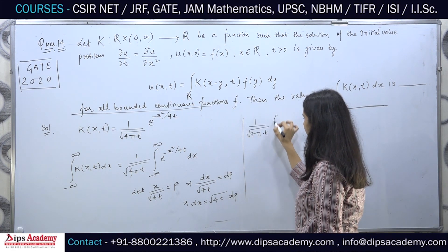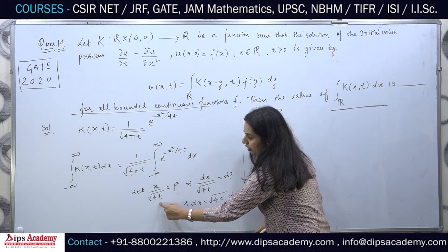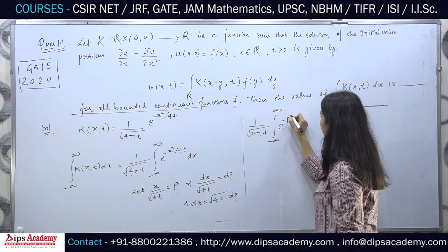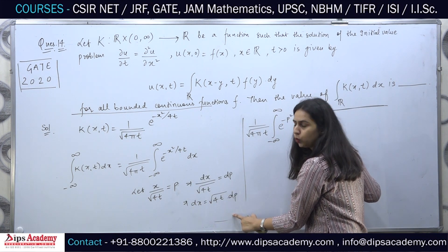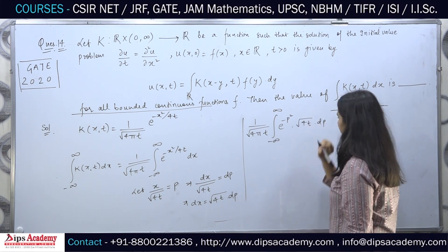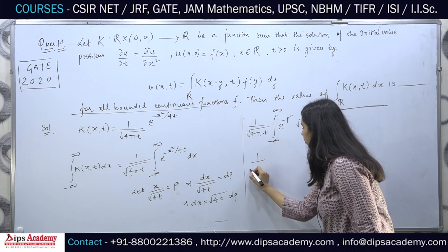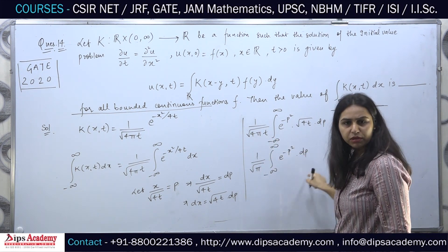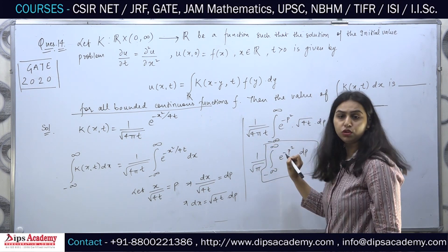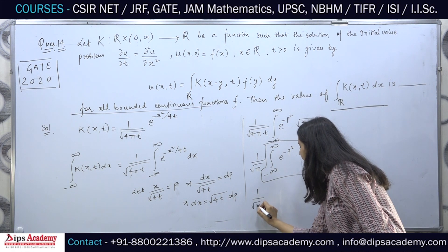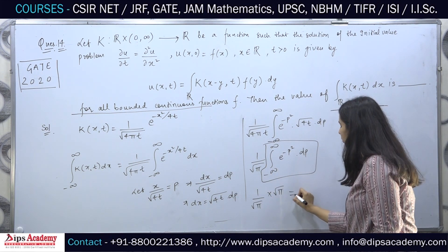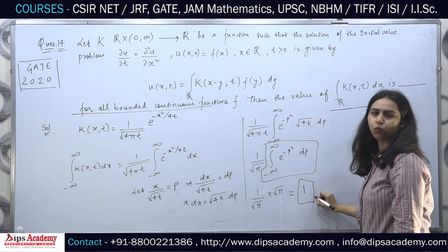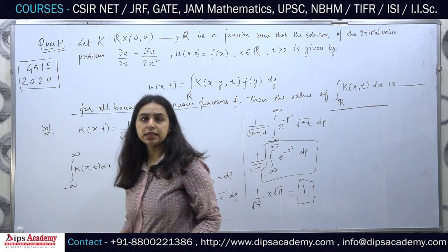Using the substitution, x/sqrt(4t) = p, so x² /4t = p², and dx = sqrt(4t) dp. The integral becomes (1/sqrt(4πt)) times the integral from minus infinity to infinity of e^(−p²) · sqrt(4t) dp. The sqrt(4t) terms cancel, leaving (1/sqrt(π)) times the integral of e^(−p²) dp. This is the famous Gaussian integral with value sqrt(π), so we get (1/sqrt(π)) · sqrt(π) = 1. The answer is 1.